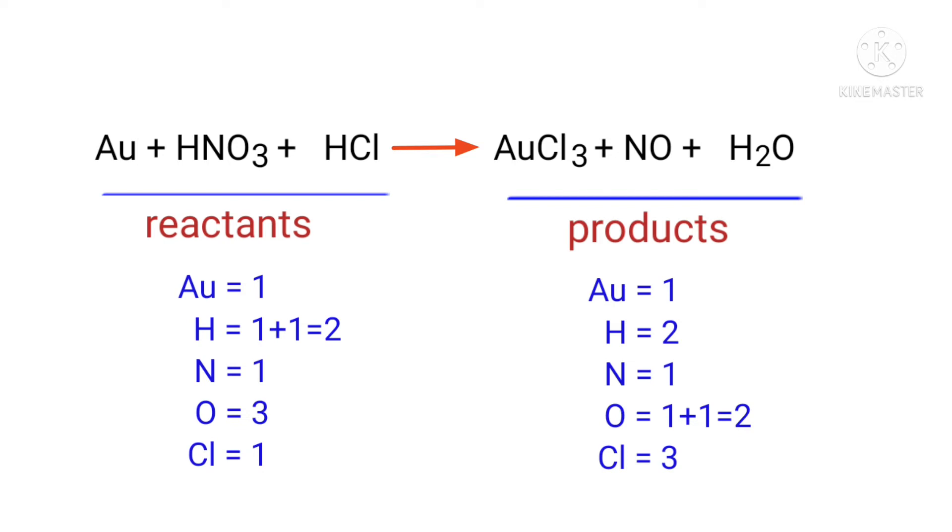In this equation we need to balance the chlorine atoms first. To do this we need to put a coefficient of 3 in front of HCl. The chlorine atoms are balanced.